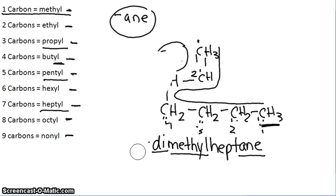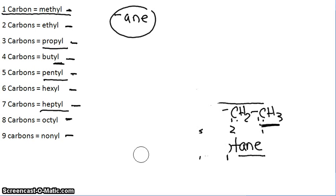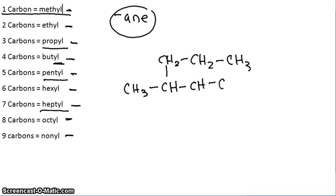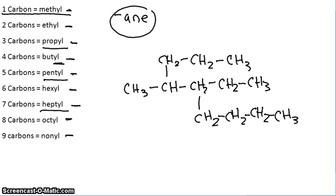So we'll do another example. Our next example is going to be a little trickier, because it has two different kinds of branches coming off. So this one is a really big compound, so first, what we're always going to do is try to find the longest chain of carbons we can.